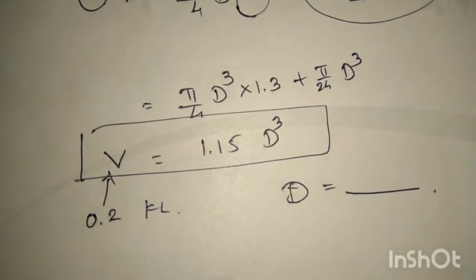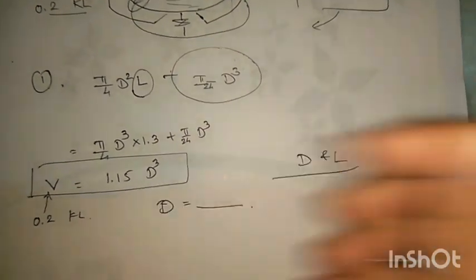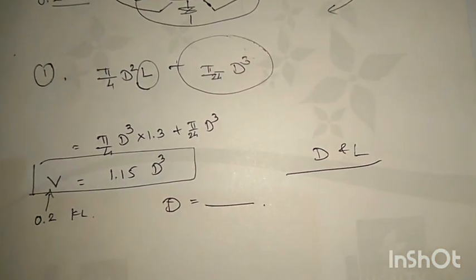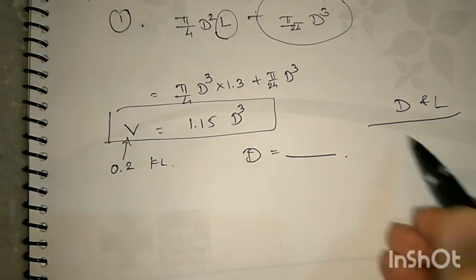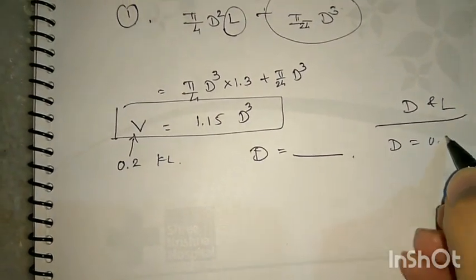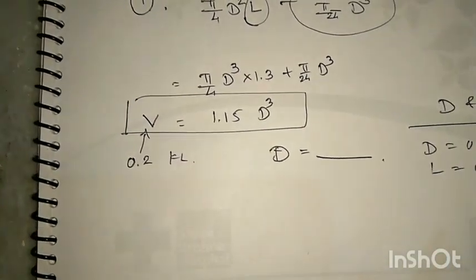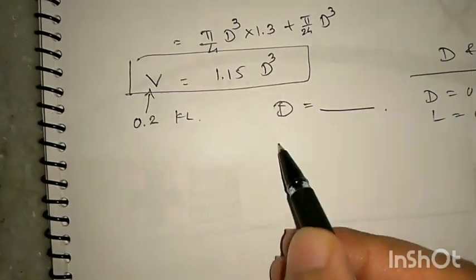Solving for D and L, I get D = 0.5 meters and L = 0.7 meters. Now it is time to calculate the heat transfer area of the reactor.